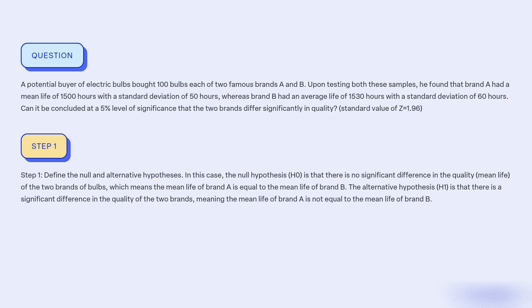The alternative hypothesis H-1 is that there is a significant difference in the quality of the two brands, meaning the mean life of brand A is not equal to the mean life of brand B.